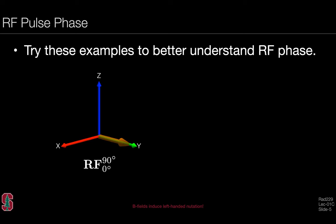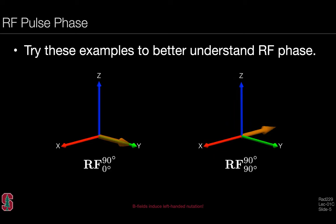We can try some examples to better understand the RF phase. In this case, the RF pulse has a phase of zero degrees and a flip angle of 90 degrees. If you align your thumb with the zero-degree axis, which is the x-axis, your fingers will curl the magnetization from its initial state along the z-axis down to the y-axis. Alternatively, if the phase is 90 degrees and the flip angle is 90 degrees, we rotate our thumb to point along the y-axis, and curling our fingers brings magnetization from z to the minus x-axis.